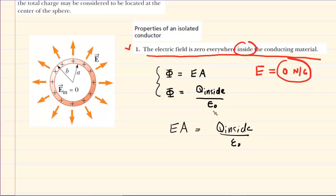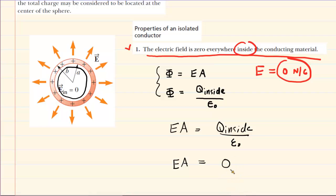Since part A asks us to determine the electric field inside of the dome, we would look inside the dome and imagine a Gaussian surface — an imaginary sphere drawn inside the dome. We then ask: how much charge is actually present inside that Gaussian surface? The answer is zero. So we set E times A equal to zero divided by that constant. Zero divided by any constant is just zero, giving us E times A equals zero. Dividing both sides by the surface area, the electric field inside is zero.